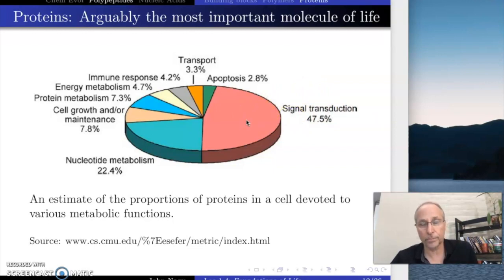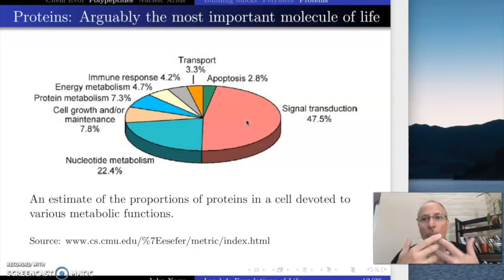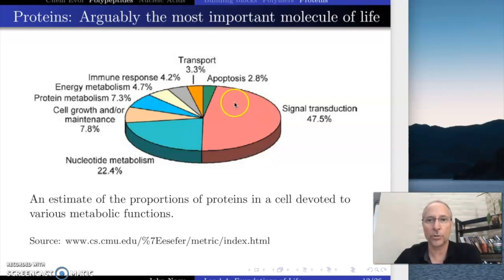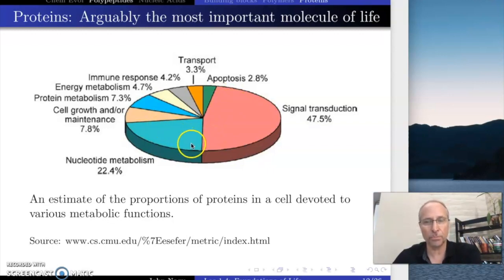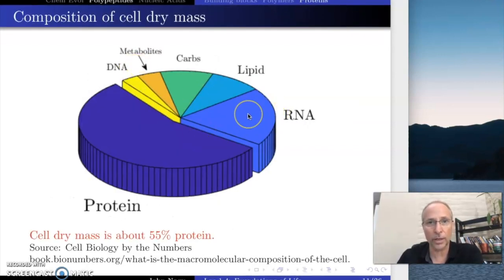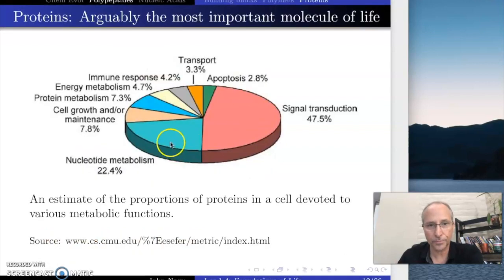If you look at this pie chart, you'll see this big giant piece — slightly less than half — is signal transduction. The proteins in your body are involved in signal transduction, which in the simplest sense means the cells are talking to each other. They work so hard to talk to each other that almost half of all the proteins in your body are associated with cells talking to each other.